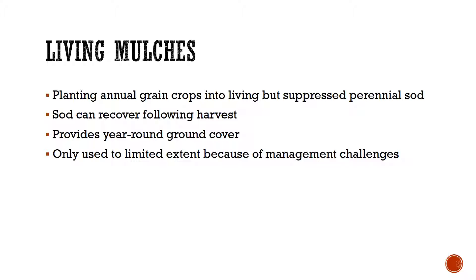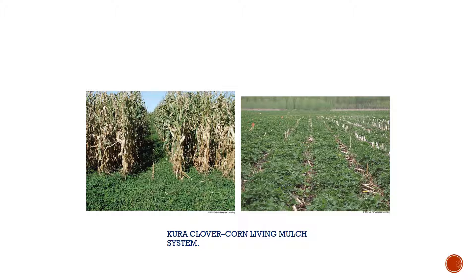Living mulches are important because we look at this more as year-round ground cover. It doesn't necessarily have to be something just for one growing season. It does give us management challenges because it is all year, and that can be good or bad depending on what kind of weather you're having. This helps the soil recover from harvest by decomposing the mulch into the soil. Here's a picture of corn in a living mulch system — that mulch will decompose into the ground, adding nutrients back to where they should be.